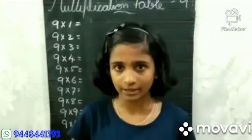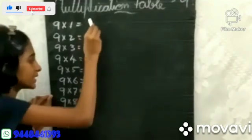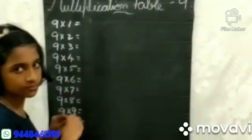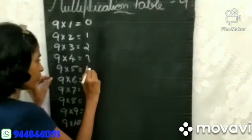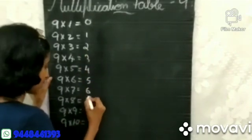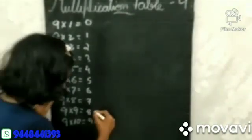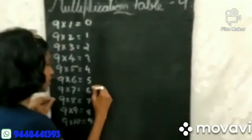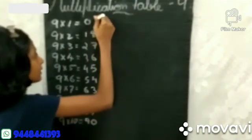Now I am going to show you another method. At first, we need to write 9×1, 9×2, 9×3, 9×4, up to 9×10. Then we want to write 0 to 9 upwards and 9 to 0 downwards: 0, 1, 2, 3, 4, 5, 6, 7, 8, 9. So we got the multiplication table of 9 in an easy method.